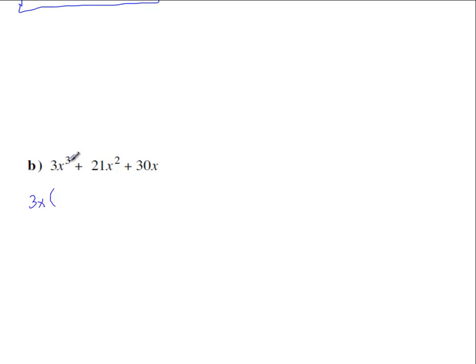Then inside the brackets you'll have 3x cubed divided by 3x. 3 divided by 3 is just 1. x cubed divided by x is x squared. 21x squared divided by 3x. 21 divided by 3 is 7. x squared divided by x is just x.